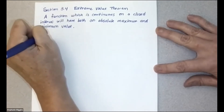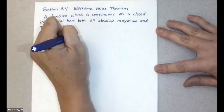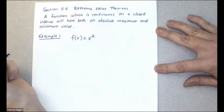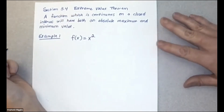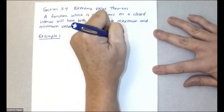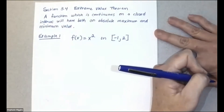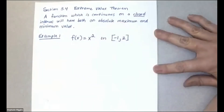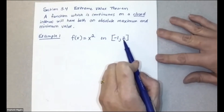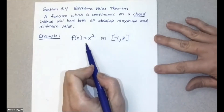For example, take the very basic function — the quadratic parabola, f(x) = x squared. Let's suppose it's defined on the closed interval from negative one to two. When you have a closed interval, it just means that you're including the endpoints of the interval, and this interval represents the domain for the function.